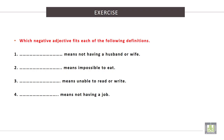Exercise: Which negative adjective fits each of the following definitions? Number 1: blank means not having a husband or wife. The answer is: unmarried. Number 2: blank means impossible to eat. The answer is: inedible.